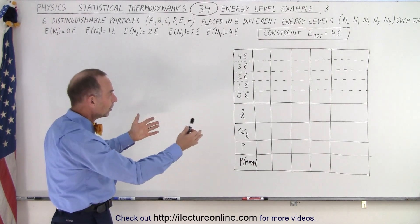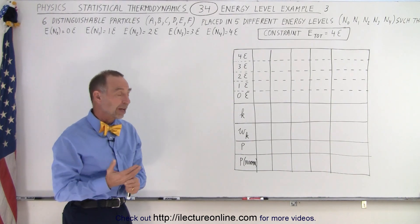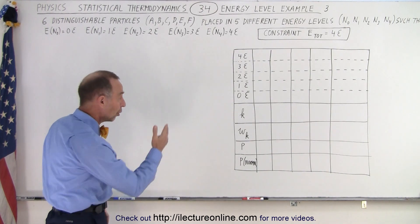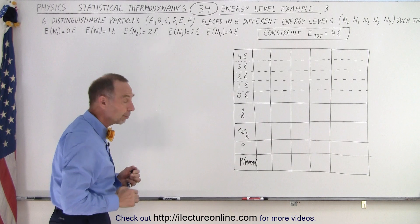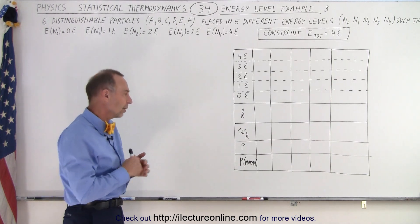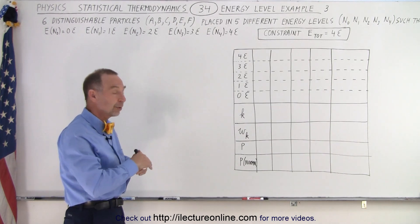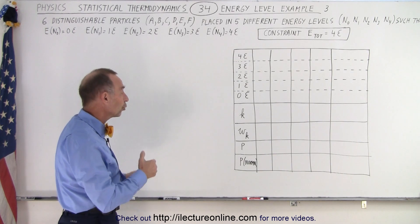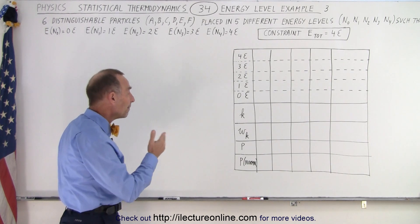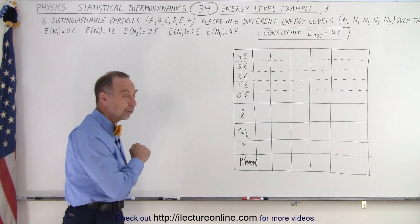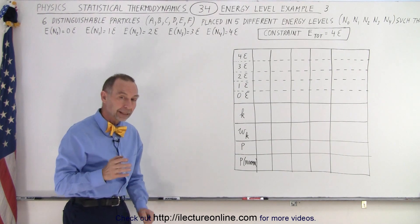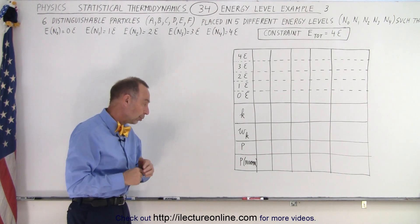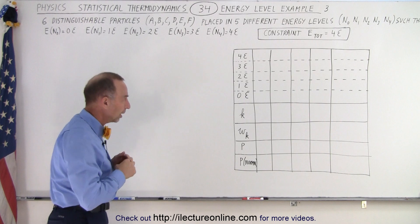Here's the table. Let's see how many different ways we can arrange them. The different configurations will give us the different number of macrostates, and we're also supposed to find the total number of microstates. On top of that, we'll find the thermodynamic probability and the thermodynamic probability normalized.